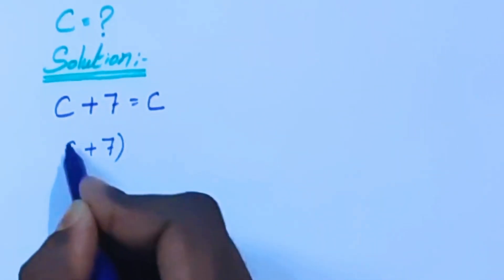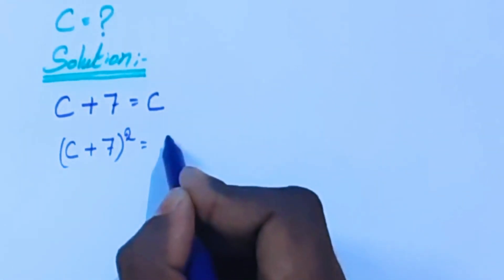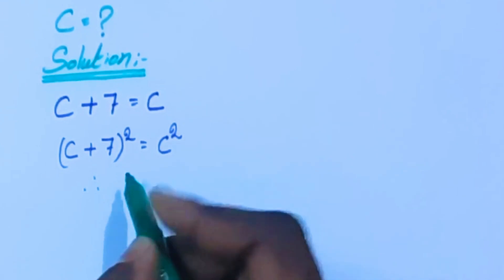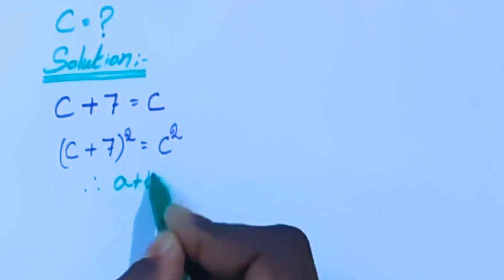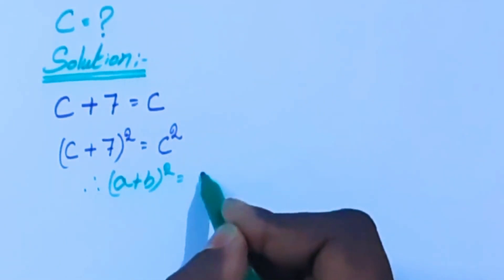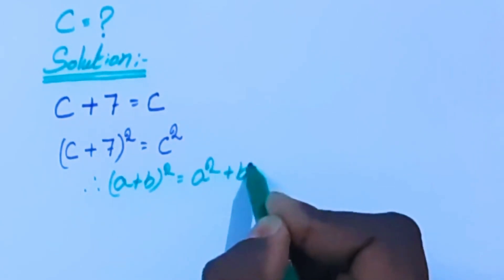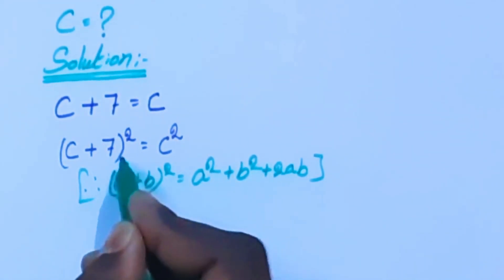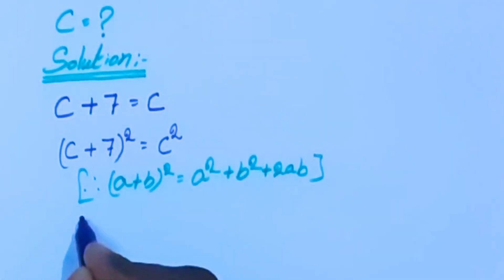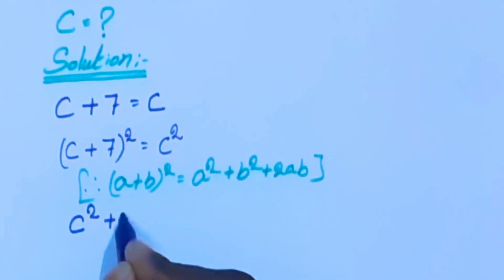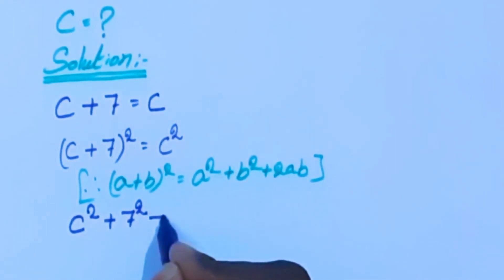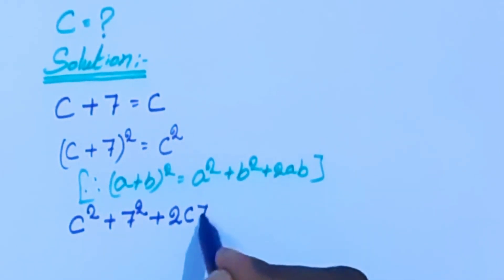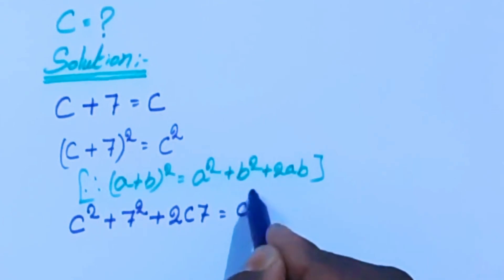So (c + 7)² = c². Now we are going to apply the algebra formula: (a + b)² = a² + b² + 2ab. Applying this formula here, we get c² + 7² + 2 × c × 7 = c².